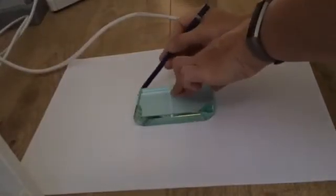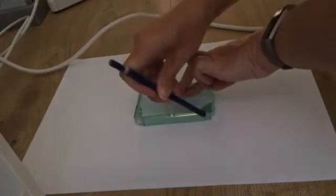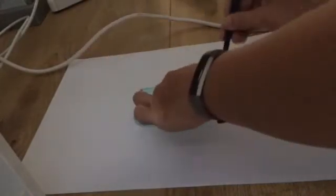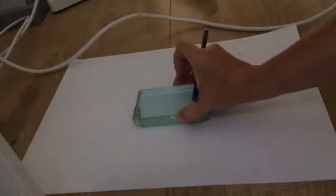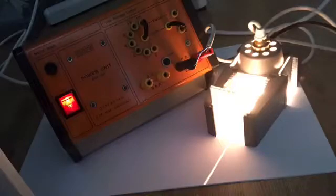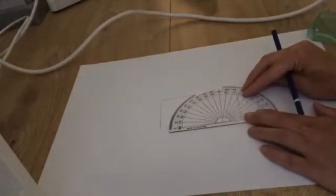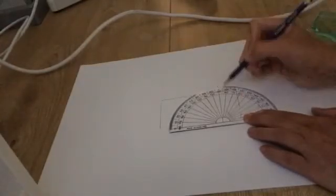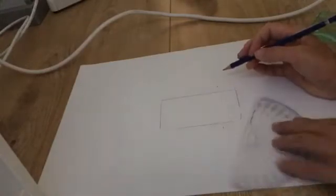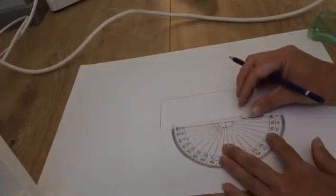We start this experiment by drawing around a glass block. This means that I'll always be able to be sure I can place it back in exactly the same position. I also need to use a ray box with a single slit grating. The ray box gets hot enough to cause a burn, so I'll have to be careful when I'm handling it. Next, I need to accurately add a normal line. This needs to be added at 90 degrees to the surface of the glass block. You'll see I'm very carefully marking that out to make sure I get it exactly right.